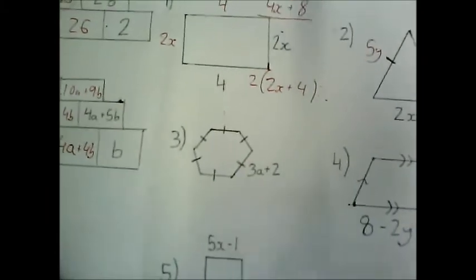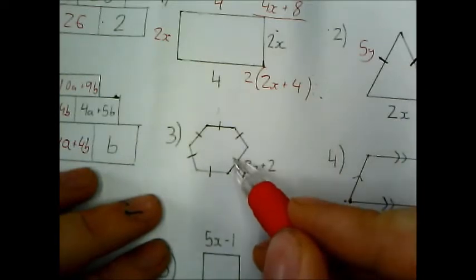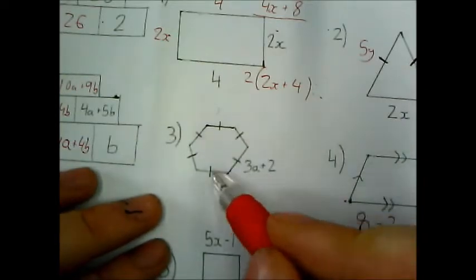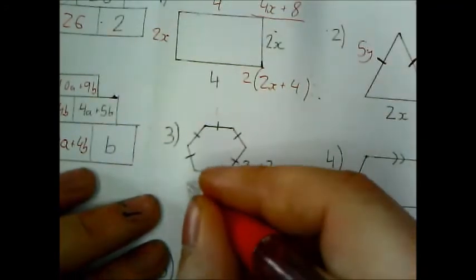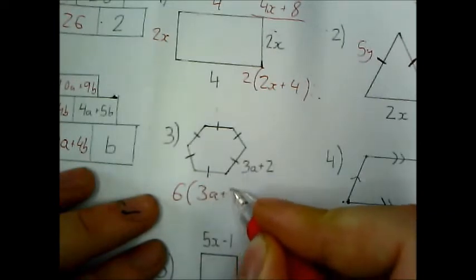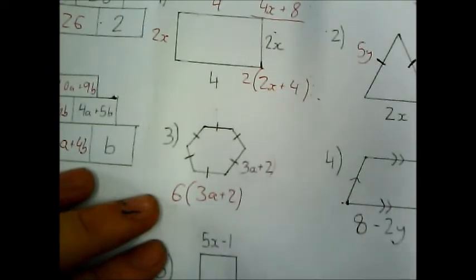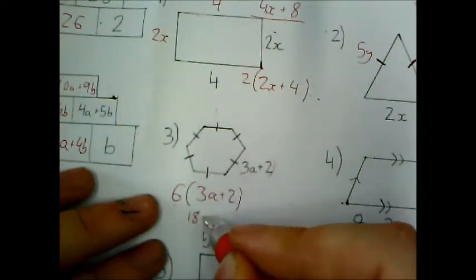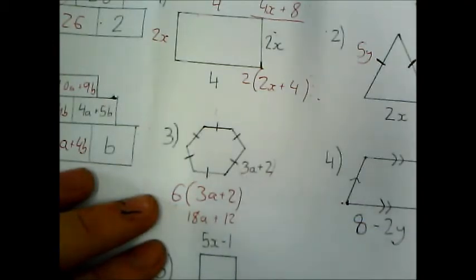Just going to focus a bit. There we are. OK. Next question. So here I've got 3a plus 2. These are all the same. And it's a 6 sided shape. OK. So this means I'm going to have 6 lots of 3a plus 2. So I write that as 6 bracket 3a plus 2. Because that means 6 times this. OK. So I've got 6 lots of those. And if you wanted to you can expand this out to give you 18a plus 12. Either of those answers are fine.